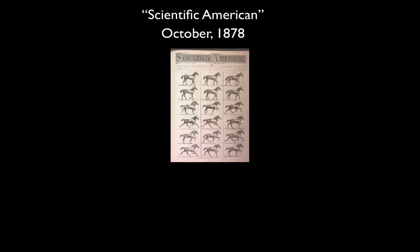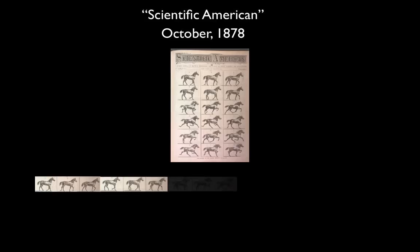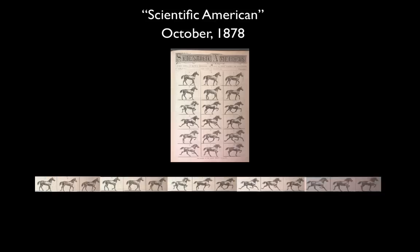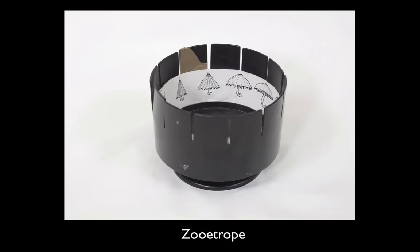Muybridge's horse studies were made available to the scientific community in 1878 when they were published in Scientific American. To demonstrate the correlation between Muybridge's study and a method for creating the illusion of motion with still images, readers were encouraged to cut out the images into strips and assemble them into a single band. The images could then be placed into a zoetrope, a device Muybridge spoke publicly about. When the zoetrope was spun, viewers could look at the images through a series of vertical slits. The result was the illusion of motion created through a sequence of still images — the motion picture had been born.